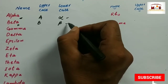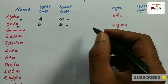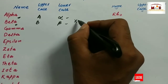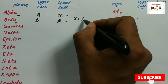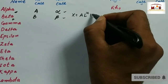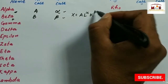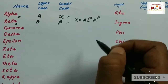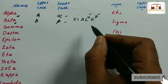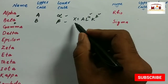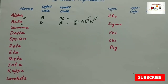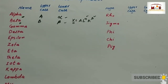Alpha and beta are mostly used in economics in the Cobb-Douglas production function, which is written as X equals A times L raised to the power alpha times K raised to the power beta. Here, alpha and beta represent the elasticities of labour and capital with respect to output X. These symbols are also used in other places as well.